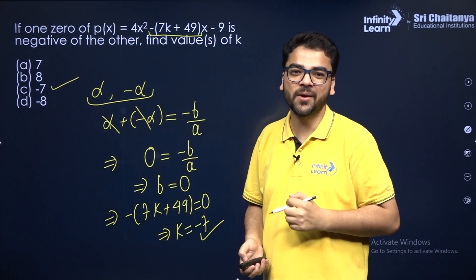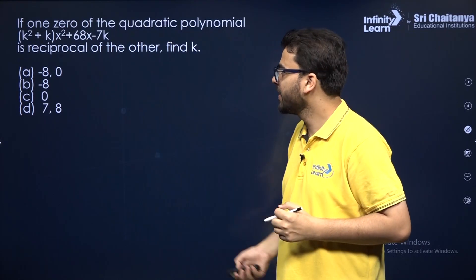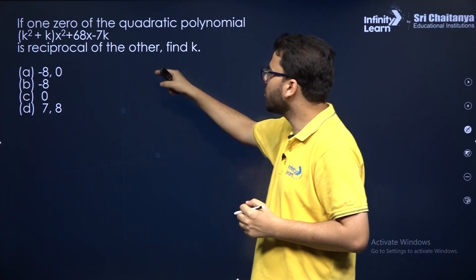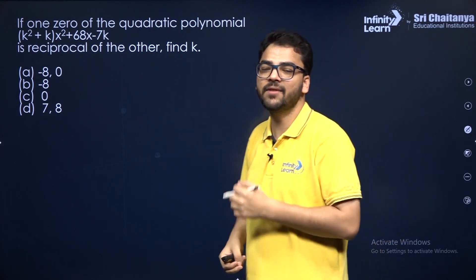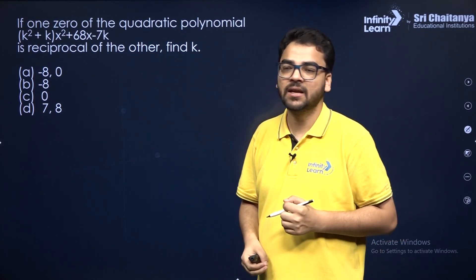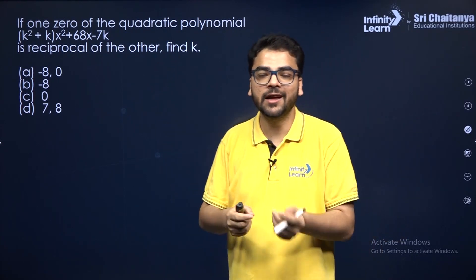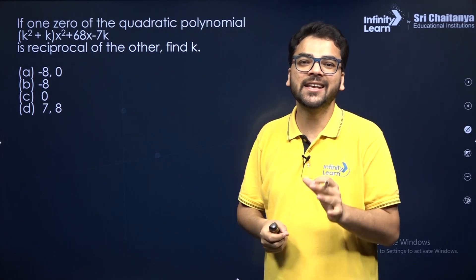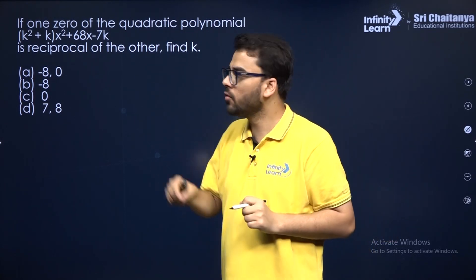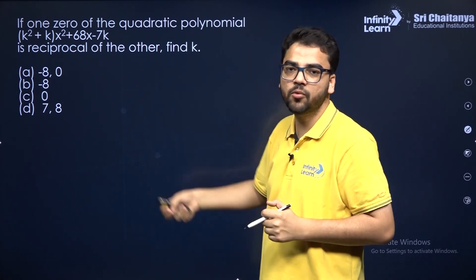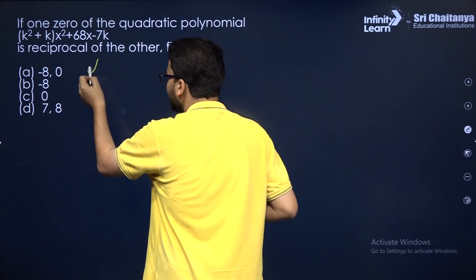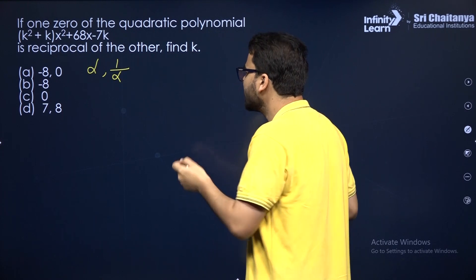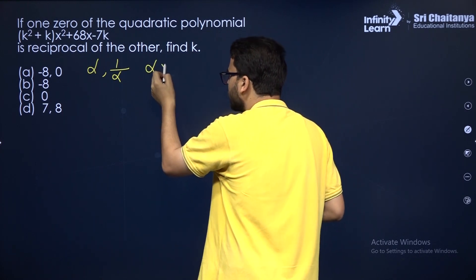Let us move on to the next question. If one zero of this quadratic polynomial is the reciprocal of the other, find the value of k. In the previous question, one zero was the negative of the other, so we used the sum of zeros. Here, one zero is the reciprocal of the other — if one zero is alpha, the other is 1/alpha — so we use the product of zeros.